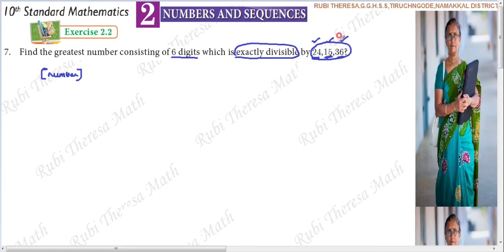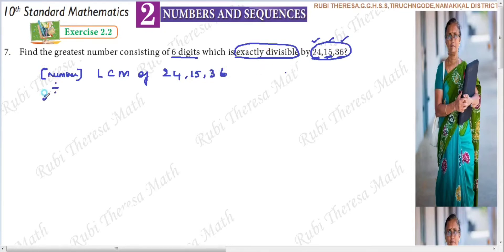If you want a common multiple, what is the step that you should follow? You have to find the LCM of 24, 15, and 36. The number which is exactly divided by 24, 15, and 36 will definitely be a multiple of 24, 15, and 36.